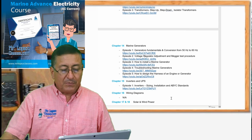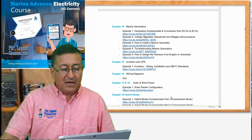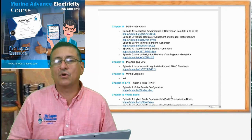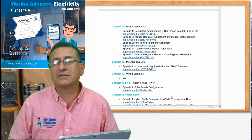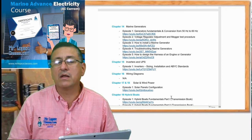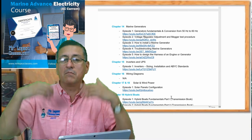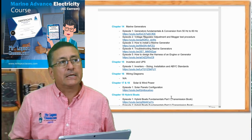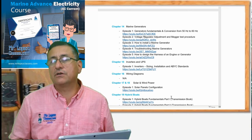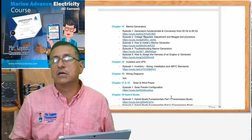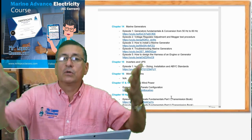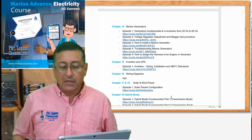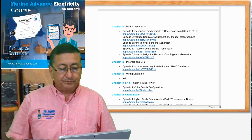In chapters sixteen, seventeen, and eighteen we are going to talk about the solar system, wind mills, and renewable sources of energy — solar and wind power.